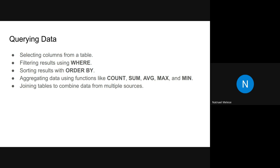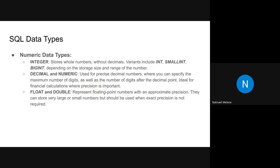Now we'll move on to SQL data types. We have numeric, boolean, date, and string data types. In the numeric category, INTEGER is used to store whole numbers without decimals — from negative infinity to positive infinity. The variants are INT, SMALLINT, and BIGINT, depending on the storage size and range of numbers.